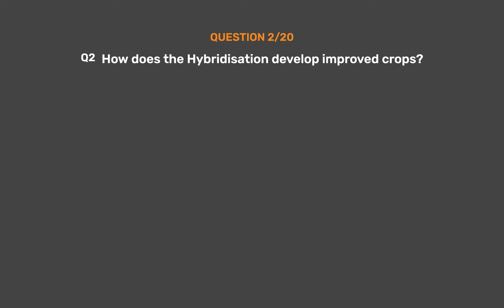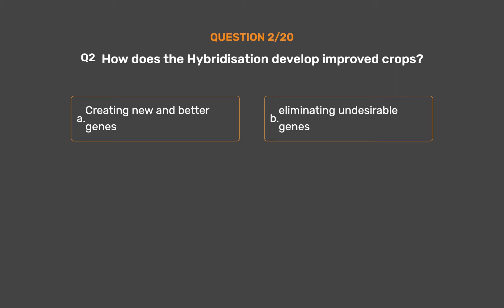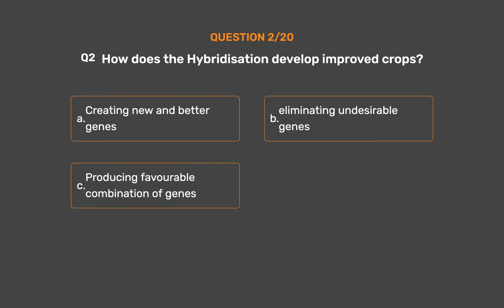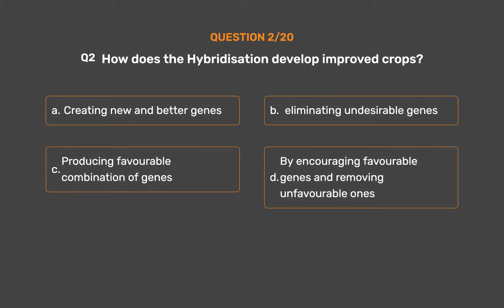Question number 2. How does the hybridization develop improved crops? Option A: Creating new and better genes. Option B: Eliminating undesirable genes. Option C: Producing favorable combination of genes. Option D: By encouraging favorable genes and removing unfavorable ones. The correct answer is Option C, Producing favorable combination of genes.